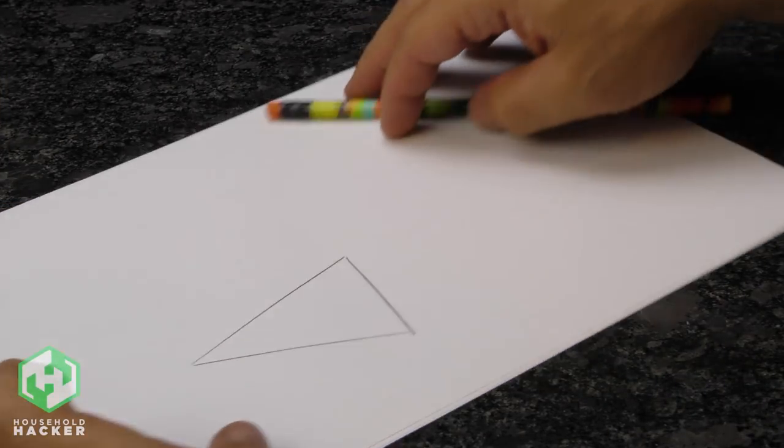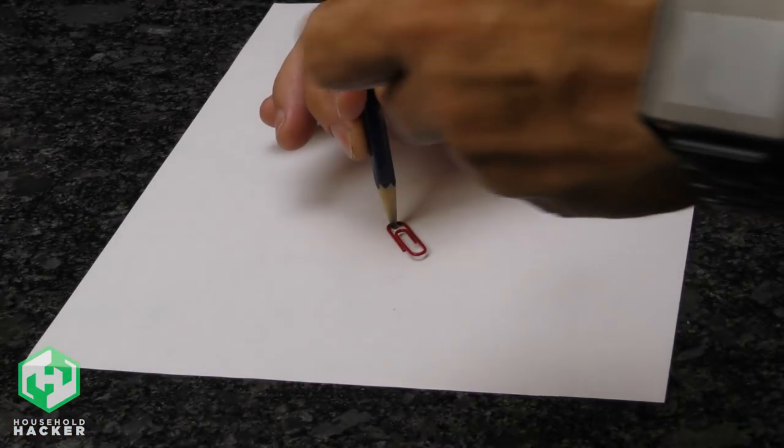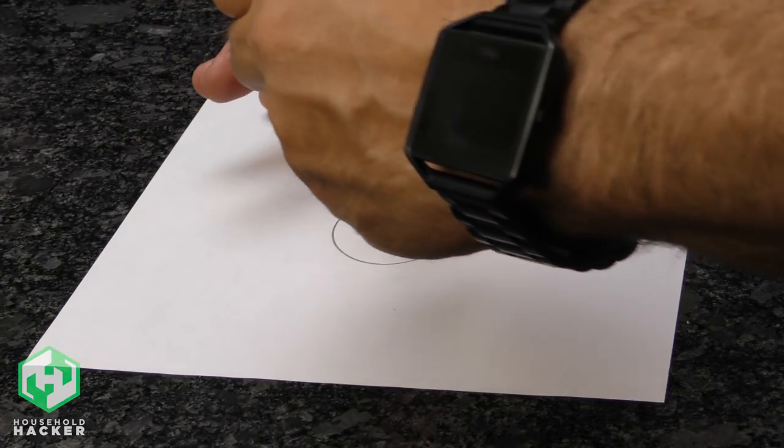Using two pencils to draw a straight line is easy, but drawing a perfect circle can be quite difficult. That is, unless you have a paperclip. Keep one pencil in place while rotating the second pencil back. This will complete your perfect circle.